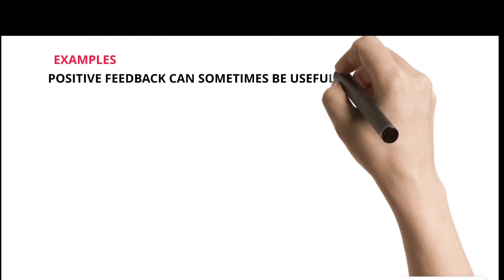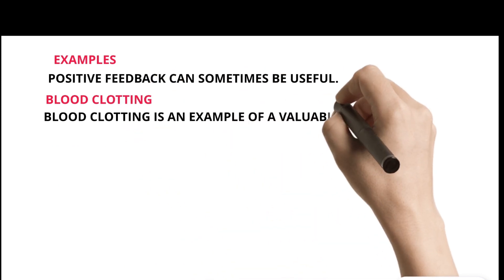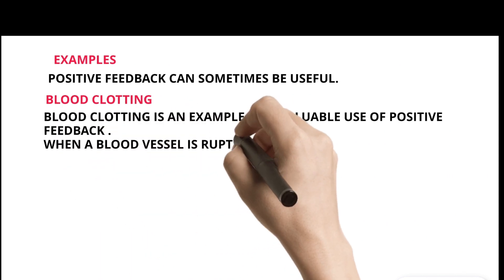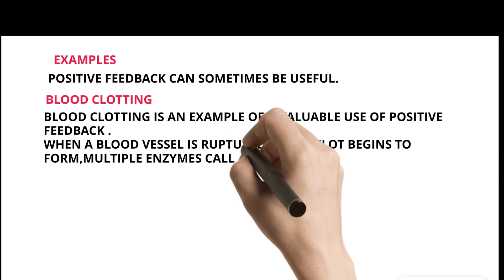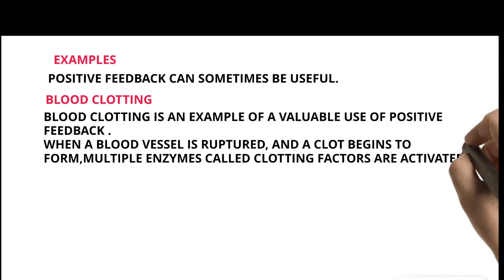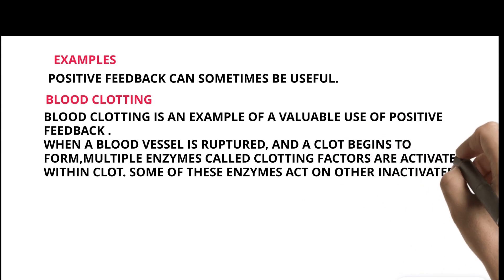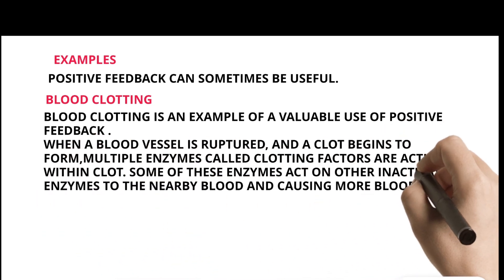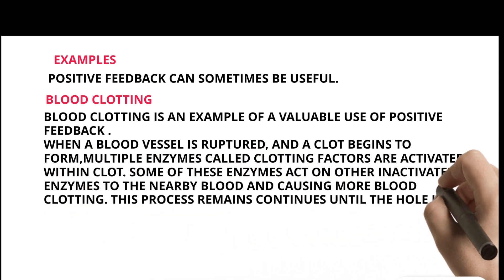Positive feedback can sometimes be useful. Blood clotting is an example of a valuable use of positive feedback. When a blood vessel is ruptured and a clot begins to form, multiple enzymes called clotting factors are activated within the clot. Some of these enzymes act on other inactivated enzymes in the nearby blood, causing more blood clotting. This process continues until the hole is plugged and bleeding stops.